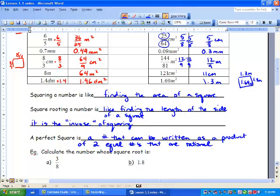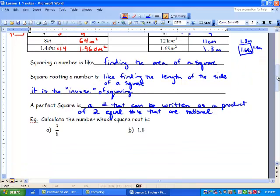A perfect square is a number that can be written as a product of two equal numbers that are rational. And remember, rational means any number that is a terminating decimal or any number that can be put into a fraction.